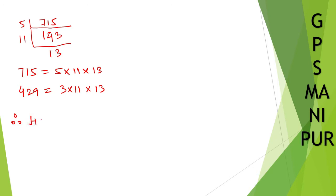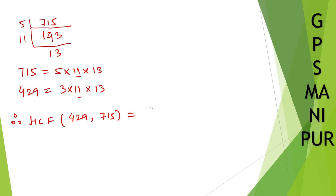Therefore, HCF of 429 and 715 — to find HCF, take only the common factors. Here 11 and 11 are common, so write down 11. And 13 and 13 are common, so write down into 13. Take only common and reject everything else. So HCF is 11 into 13, which is 143. This is your HCF.